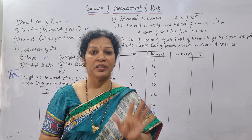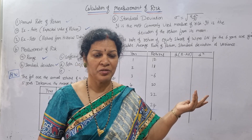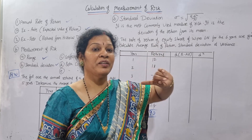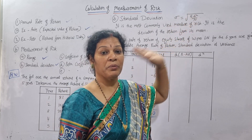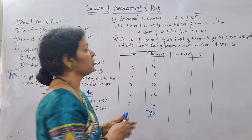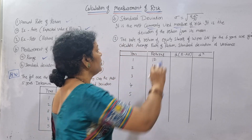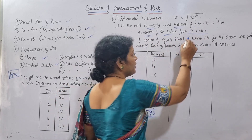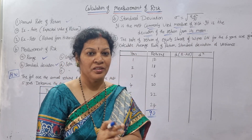In this risk and returns chapter we are learning only the individual series. For discrete series it would be sigma fd-square, and continuous series also uses fd-square. So we use rho equals root of sigma d-square by n. Standard deviation is the most commonly used measure of risk — it is the deviation of returns from its mean.